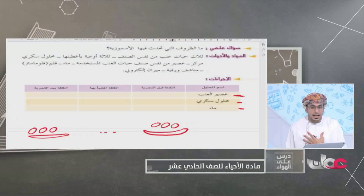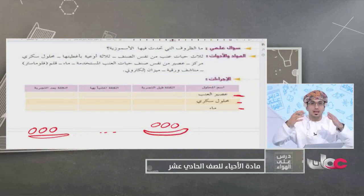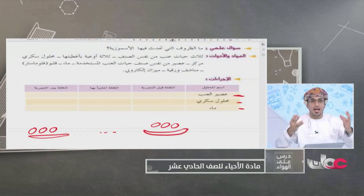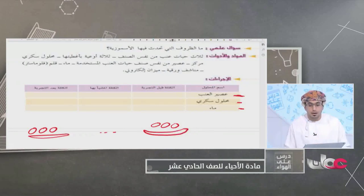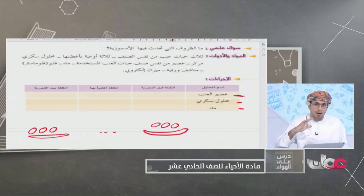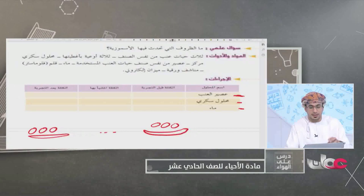شخصياً أتنبأ بأنه في المحلول السكري سيخرج الماء وستقل الكتلة. وفي الماء ستنتفخ حبات العنب وستزداد كتلتها. أما في عصير العنب فالموضوع غير واضح، لا أعرف إن كانت ستنتفخ أم ستنكمش، لذا سأنفذ التجربة وأرى النتائج.